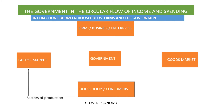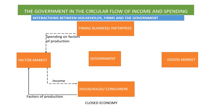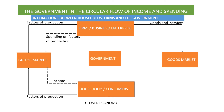Households sell their factors of production in the factor market. In turn, they get income. The firms spend their money in the factor market and receive the factors of production. The businesses then convert the factors of production into goods and services. They sell the goods and services in the goods market and get income from it.